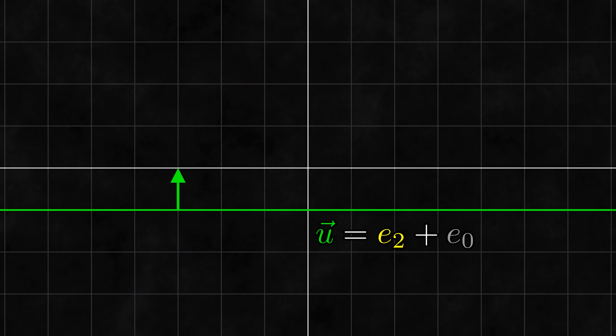Using these arrows, we can also start to understand what is going on when we scale a line. While scaling a line doesn't change the line, it does scale the arrow that we associate with it.